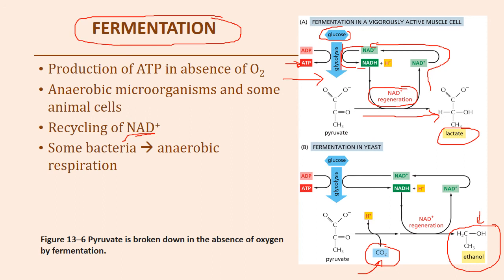To recap: fermentation is just one step — glycolysis — it doesn't require oxygen, takes place in the cytosol/cytoplasm, and is often seen in microorganisms and anaerobic bacteria. It should also be noted that some bacteria can do anaerobic respiration — all three steps (glycolysis, citric acid cycle, electron transport chain) — but being prokaryotic, they don't utilize mitochondria. Instead, all three reactions occur within the cytoplasmic region.